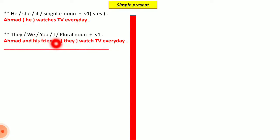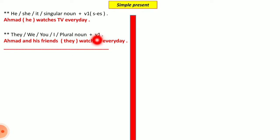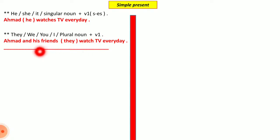The second group: if the subject is they, we, you, I, or any plural noun, we use verb one without 's.' There is no 's' addition here — the verb stays as it is, without any change.